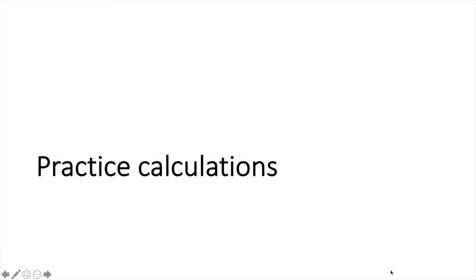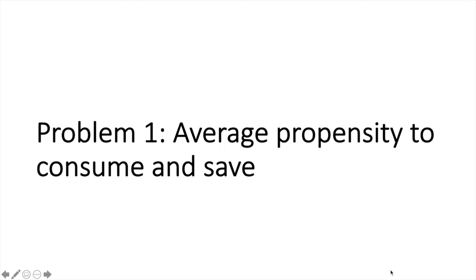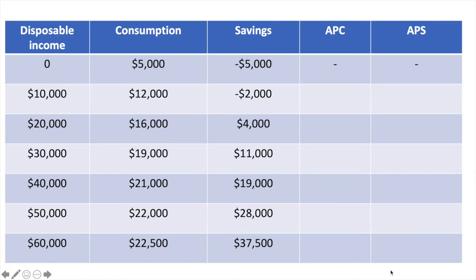To strengthen your understanding, let's do some practice calculations. I'll share a table with disposable income, consumption, and savings data. You'll need to use this information to calculate the average propensity to save and consume. I've listed the disposable income for an individual along with their total consumption and total savings at each step. You'll need to calculate the APC and APS from this data. Pause the video here and press play when you are ready to check your answers.